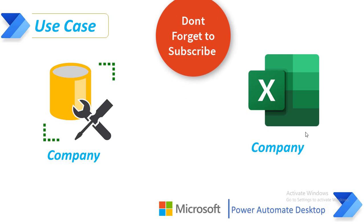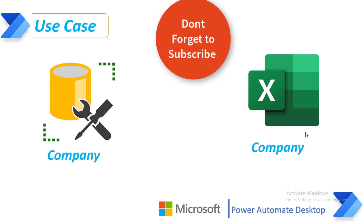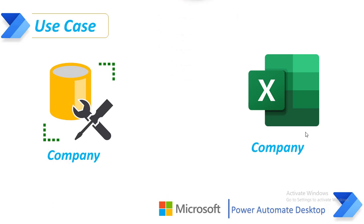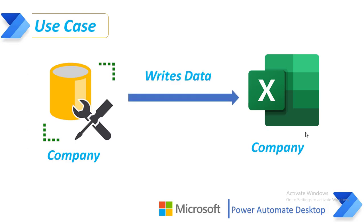Let me start with this simple use case. In my SQL Server database, I am having a company as a table, and in the table I am having a lot of data. What I want to do is fetch the data by using some of the actions in Power Automate Desktop, and after fetching the data, I want to write it into an Excel file named company.